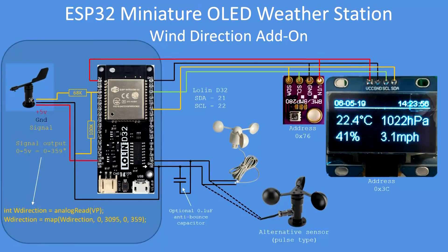The only thing missing from the design is wind direction, but you can buy wind direction sensors with a 0 to 5 volt output. It needs just two lines of code: one to read the analog port and map it from 0–3095 (its maximum reading) to 0–359 degrees, and then display the wind direction in degrees wherever you wish on the display. It's a fairly trivial addition to add wind direction.